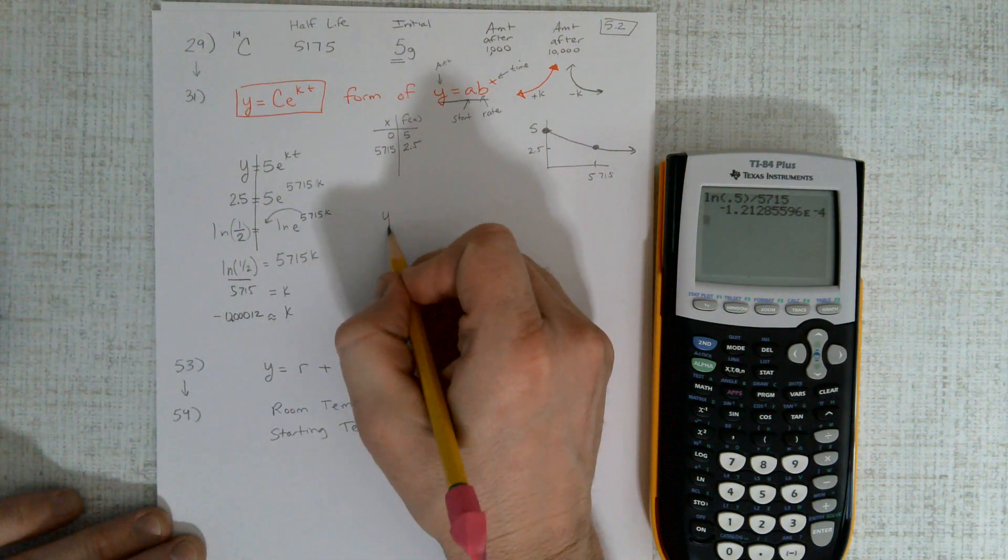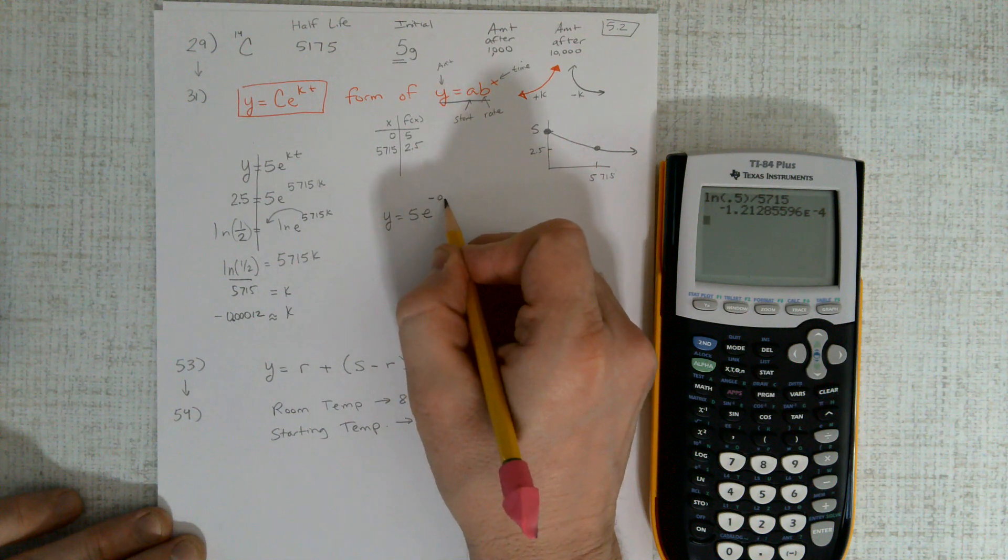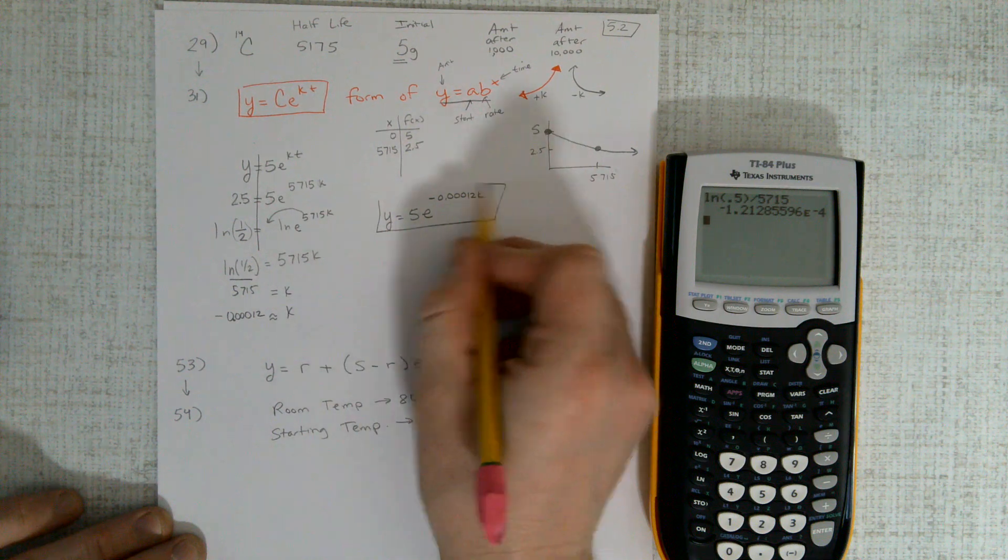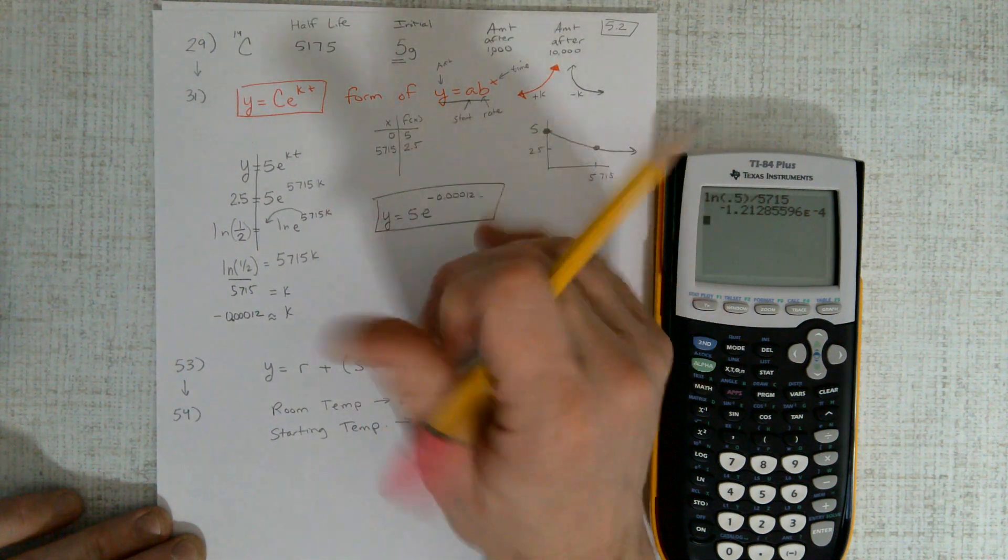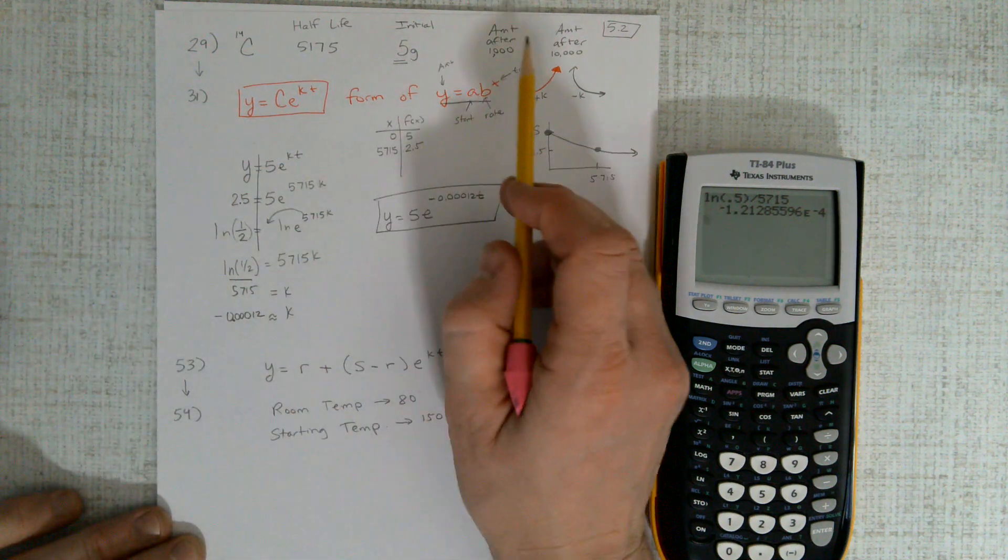And I can plug that into my equation: y equals 5e to the negative 0.00012k—whoops, not k, t, right? And I have everything I need to answer this question.